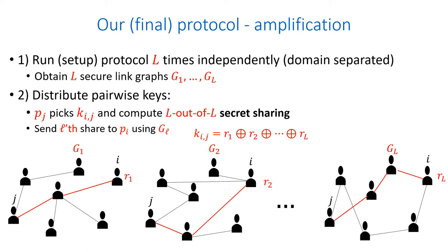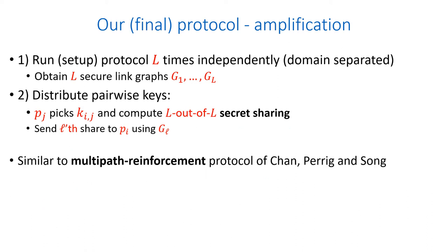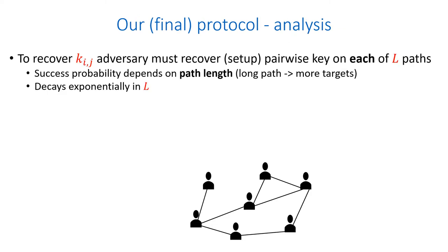Player j then sends each share on a different secure path on a different graph. Now, an adversary that wants to recover the key has to invert a link in all of the L paths. This method is similar to the multi-path reinforcement protocol introduced in a paper by Chan, Perry, Getz, and Zong. Finally, to recover a key, the adversary must recover a key on each of the L paths used. The success probability of the adversary grows with the path's length but decays exponentially in the number of times the setup protocol ran.